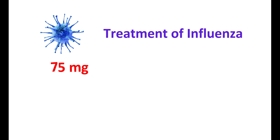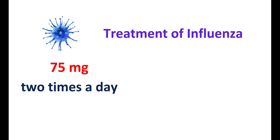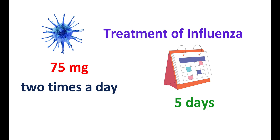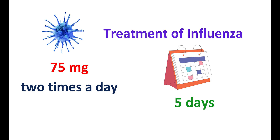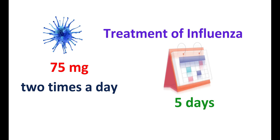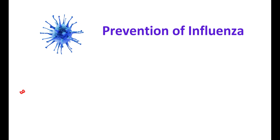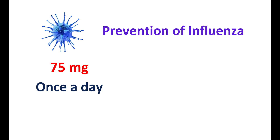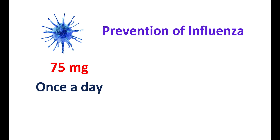For the treatment of influenza, this medication is given at a dose of 75 mg twice a day in adults. The dose may be modified based on the patient's condition, and it can be given for up to five days for treatment of influenza infection. This medication should be taken within 24 to 48 hours of infection. For prevention of influenza, it is given at the same dose of 75 mg, but only once a day, since it is used as a prophylactic.